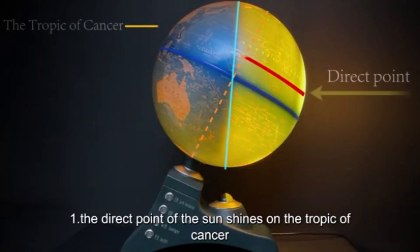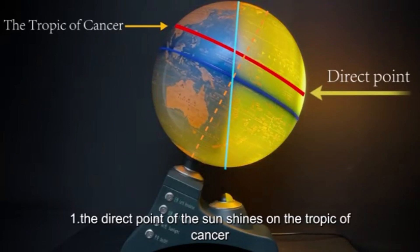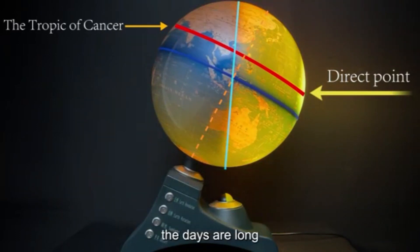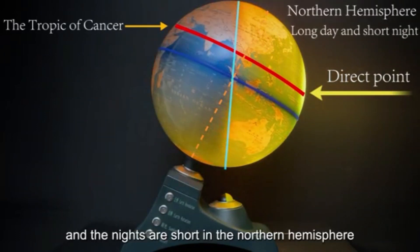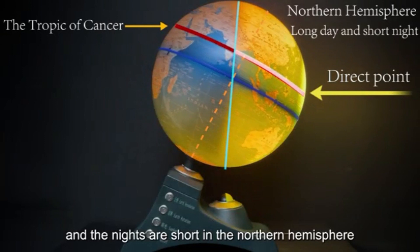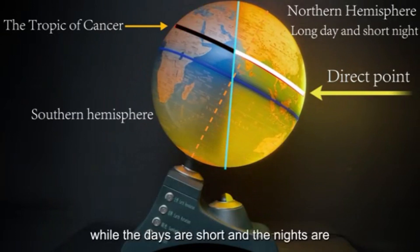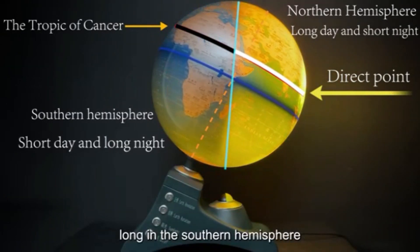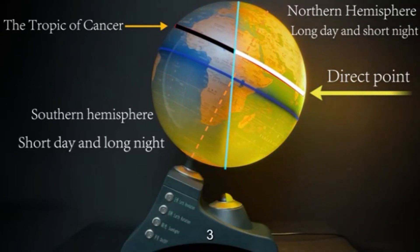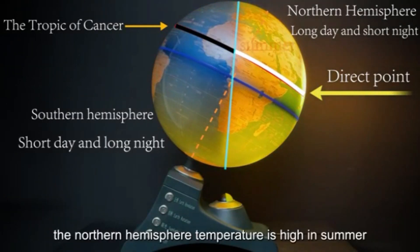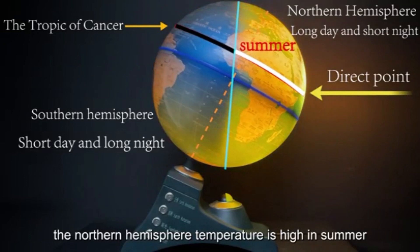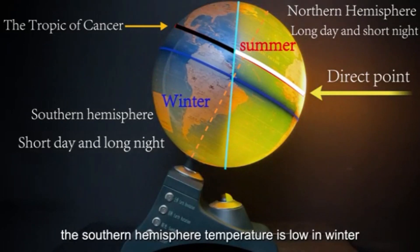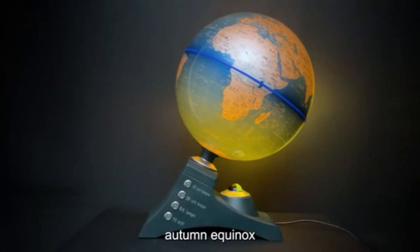Summer Solstice: The direct point of the Sun shines on the Tropic of Cancer. The days are long and the nights are short in the northern hemisphere, while the days are short and the nights are long in the southern hemisphere. The northern hemisphere temperature is high in summer, while the southern hemisphere temperature is low in winter.